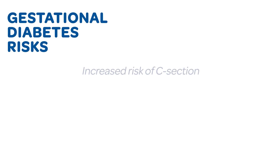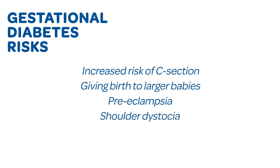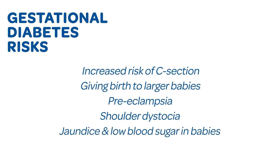It can cause an increased risk of having a C-section. It can cause larger babies, which is one of the reasons that moms end up with C-sections. It can increase mom's risk of having preeclampsia. It also increases risk to babies — things like shoulder dystocia, where a baby gets stuck during delivery, and then also things after delivery, like jaundice or low blood sugars in babies.